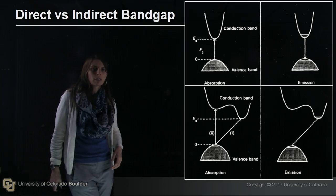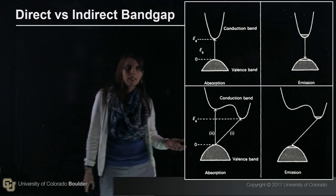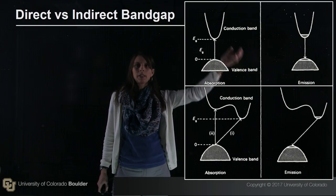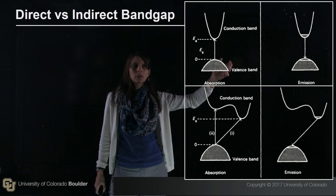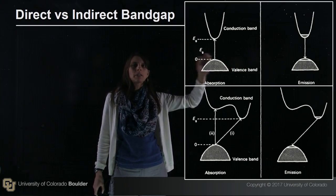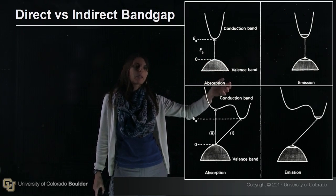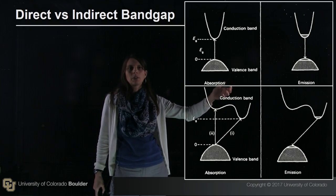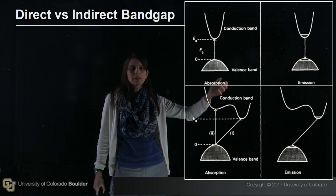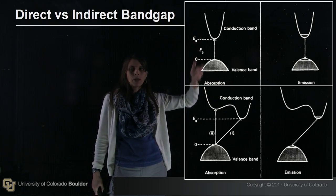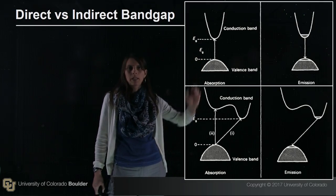The next thing we need to talk about is the difference between direct and indirect bandgap materials. A direct bandgap is shown here, where the minimum of the conduction band in K-space aligns with the maximum of the valence band. These types of materials are very good for light emission because a photon has very little momentum and undergoes a vertical transition on the K-space diagram.